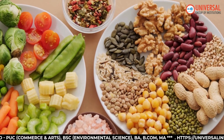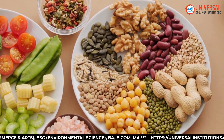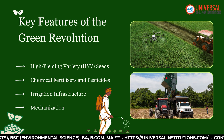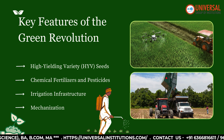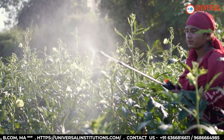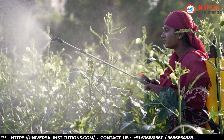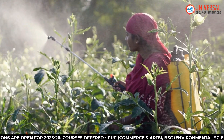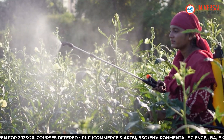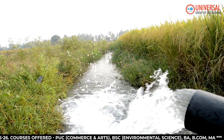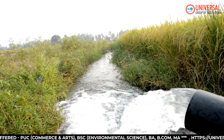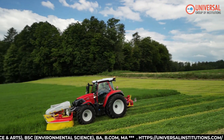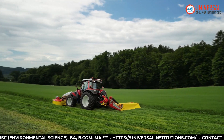The Green Revolution introduced several key modern agricultural practices. First, high-yielding variety seeds — IR8 rice and Kalyan Sona wheat were introduced, producing higher yields than traditional varieties. Second, chemical fertilizers boosted soil fertility while pesticides controlled pests and diseases. Third, irrigation infrastructure was expanded through tube wells and channels, with advanced techniques like sprinklers also introduced. Fourth, mechanization through the use of tractors and harvesters improved farming efficiency.